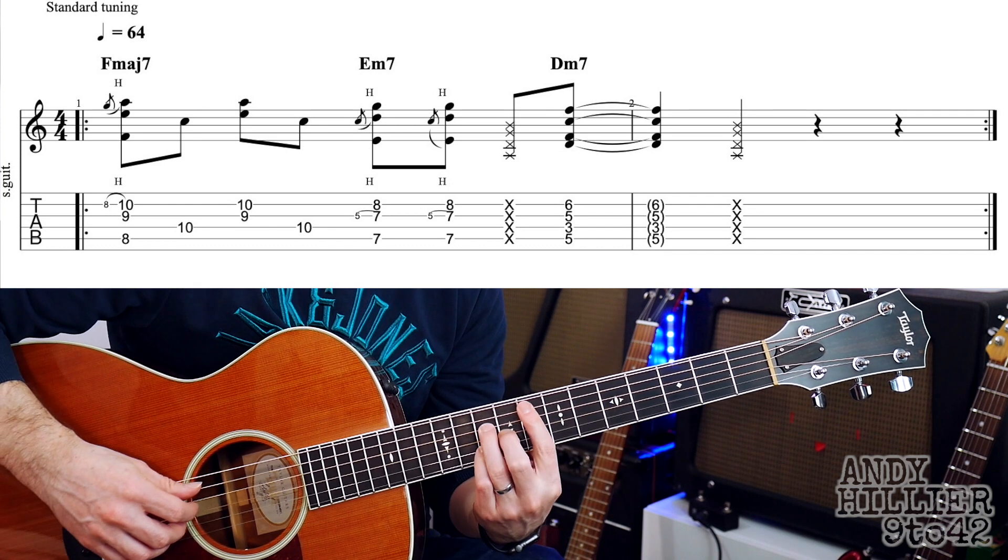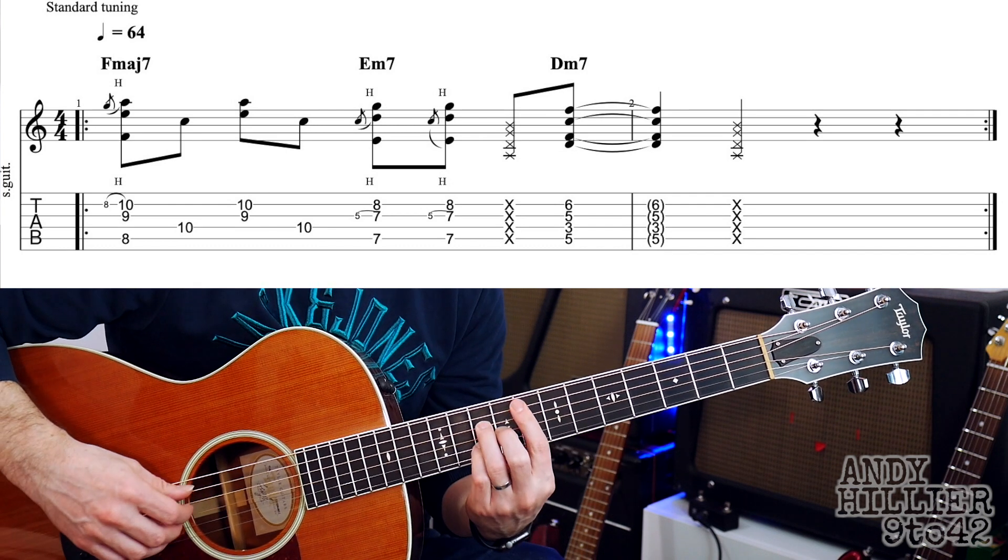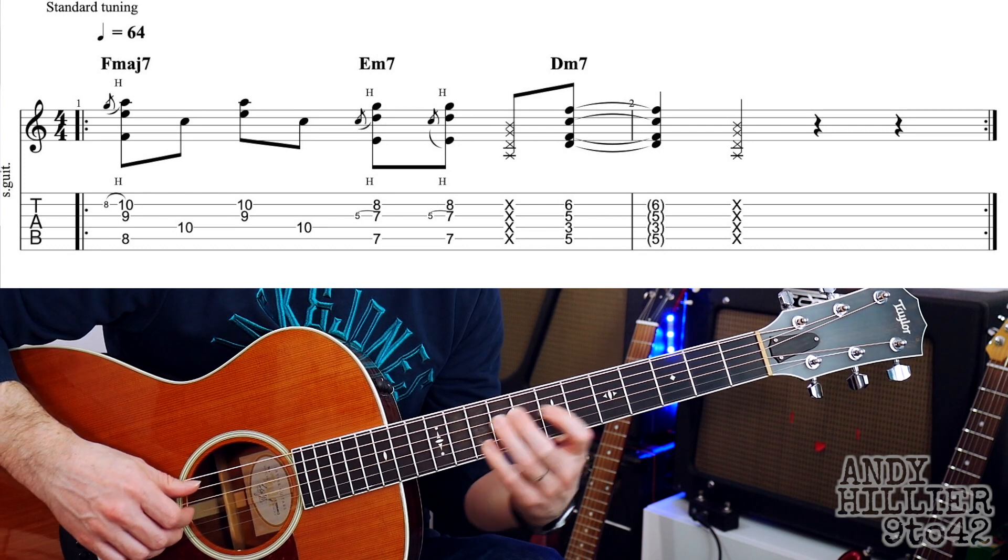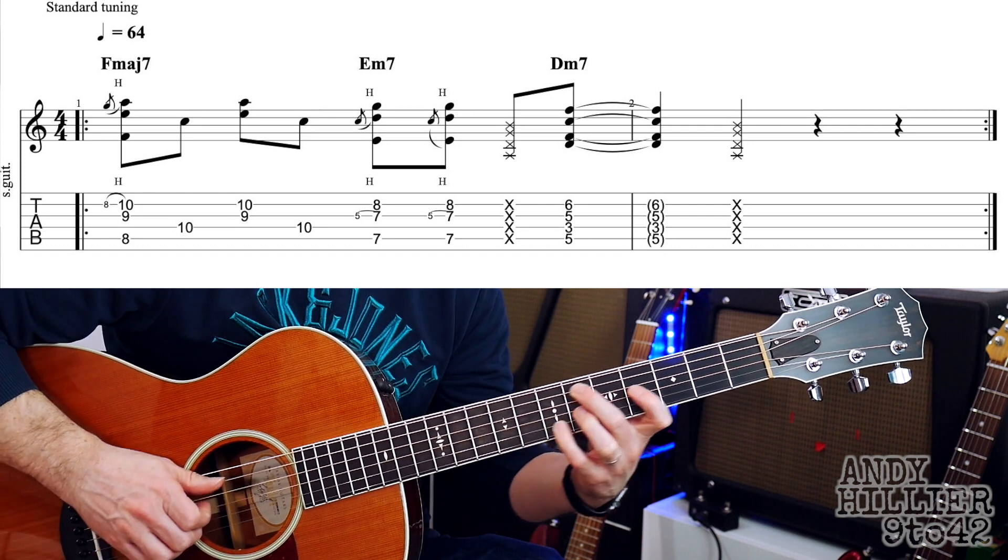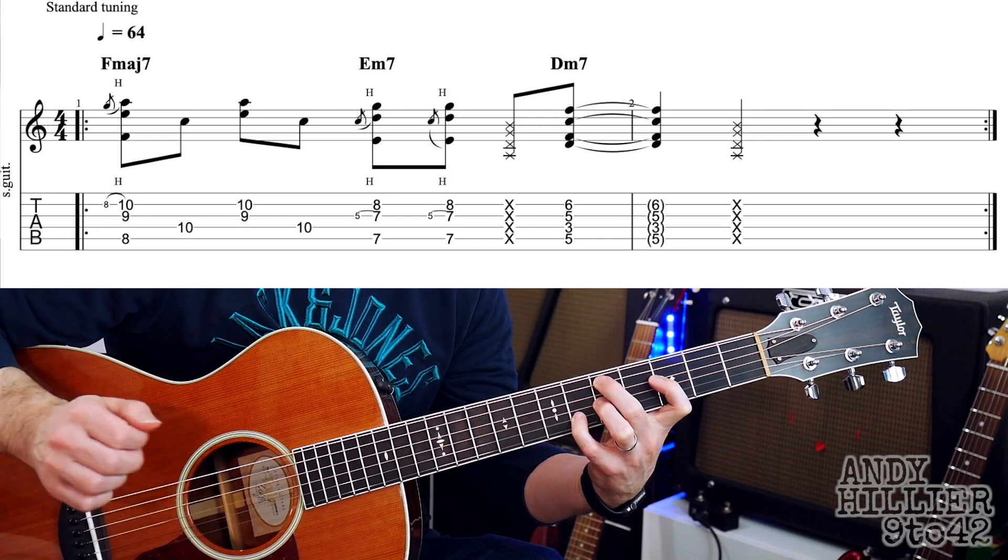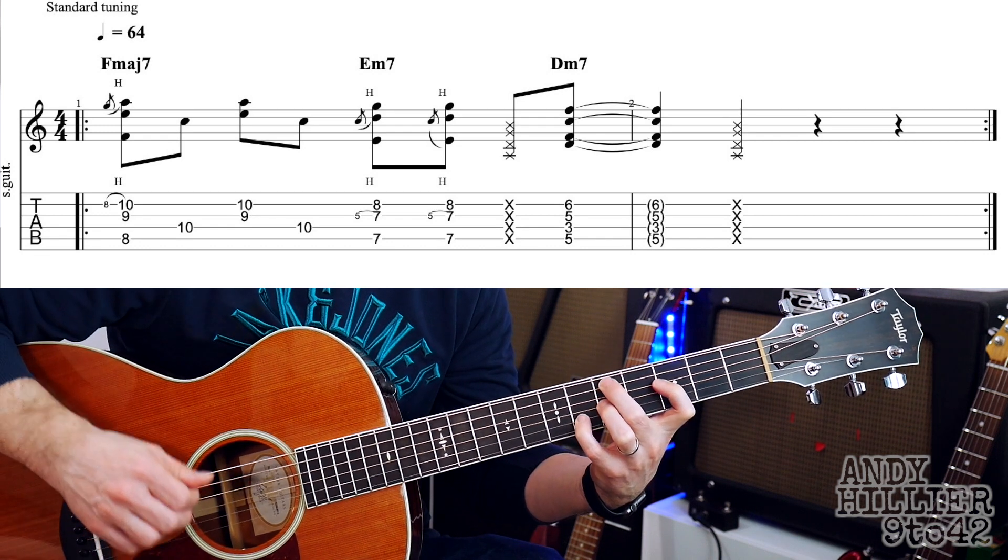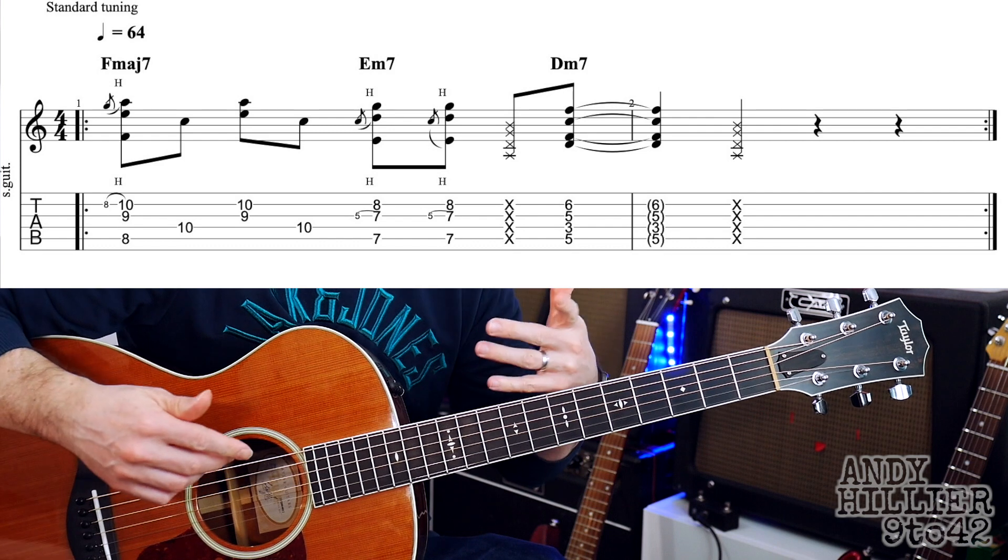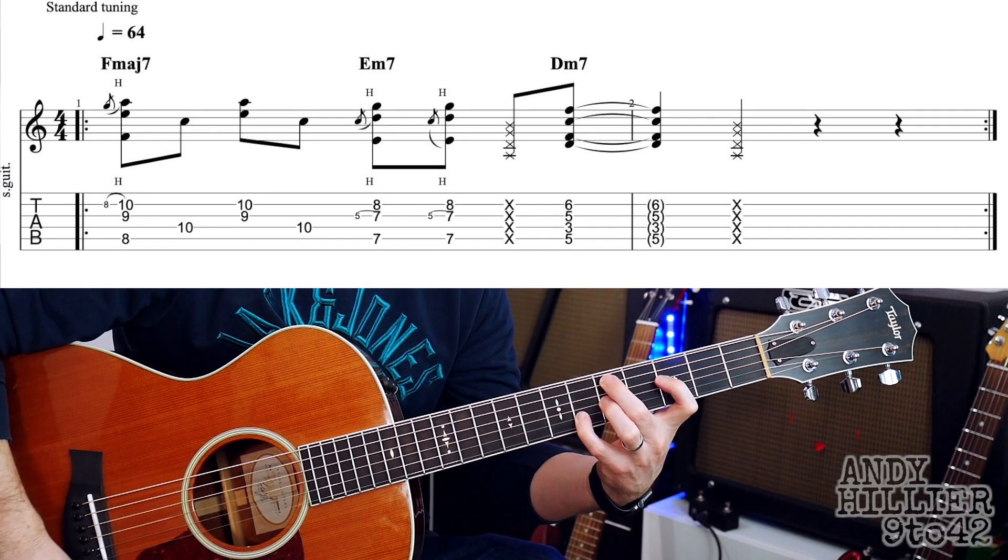So if we put it all together, you get this. We'll do it nice and slowly, and then you can fill the rest of it out with that D minor chord if you want to or you can just leave it ringing.